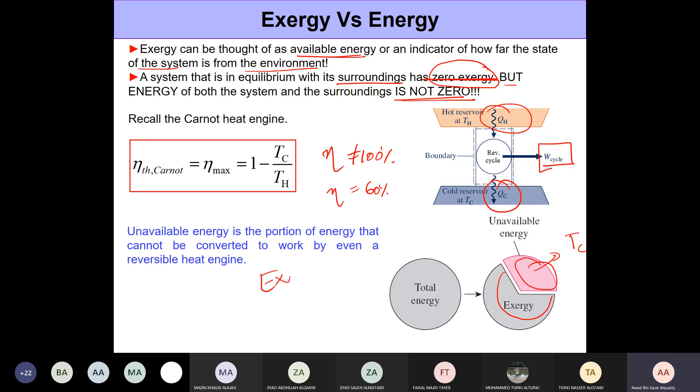The value of exergy for a given state will always be less than the value of energy for that state, simply because exergy refers to available energy, and there will always be some amount of energy which is simply unavailable to us.